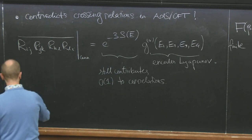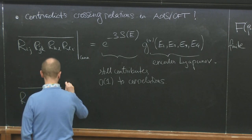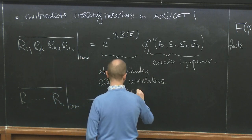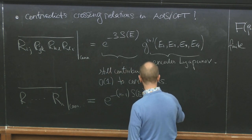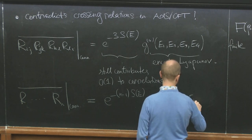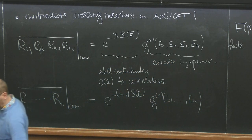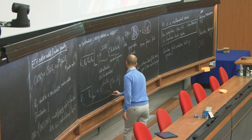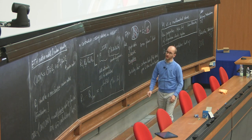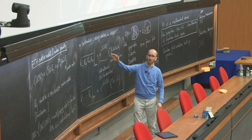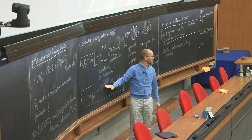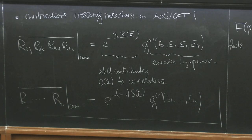In general, an N-point connected correlation should be something like e to the minus (N-1) times S of the average entropy, times some smooth function G_N of the N arguments. From the energy perspective, ETH gets corrected — Gaussian ETH gets corrected by very small non-Gaussian corrections that are increasingly small in the entropy, but from a physical perspective they contribute to physically interesting correlation functions at leading order. This is the sense in which one might say it's actually strongly non-Gaussian.